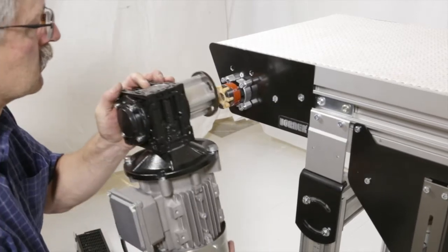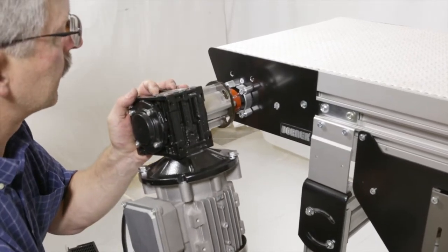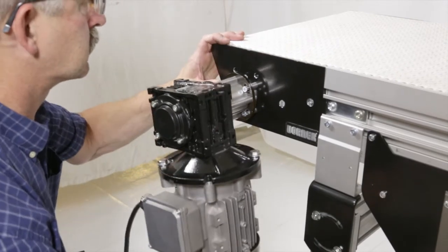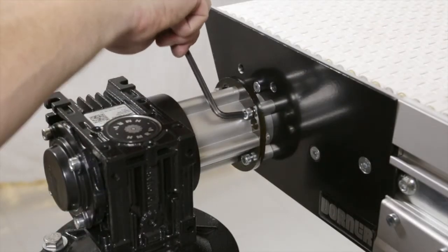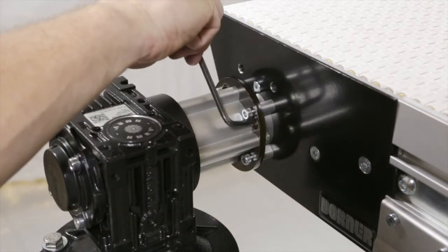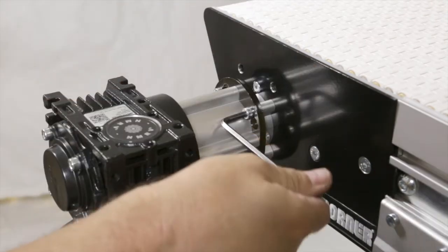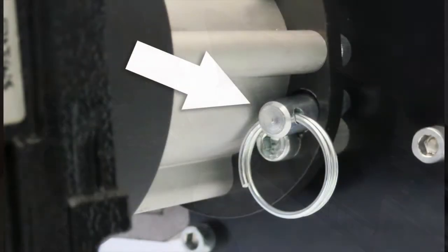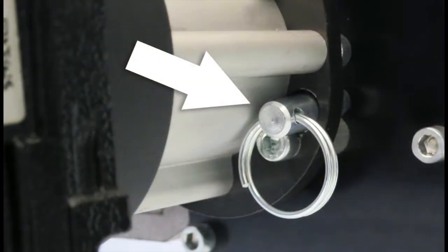Slide mounting screws through the slots in the gear motor bracket and rotate the gear motor assembly into the desired position. Tighten the mounting screws. Install the anti-rotation pin.